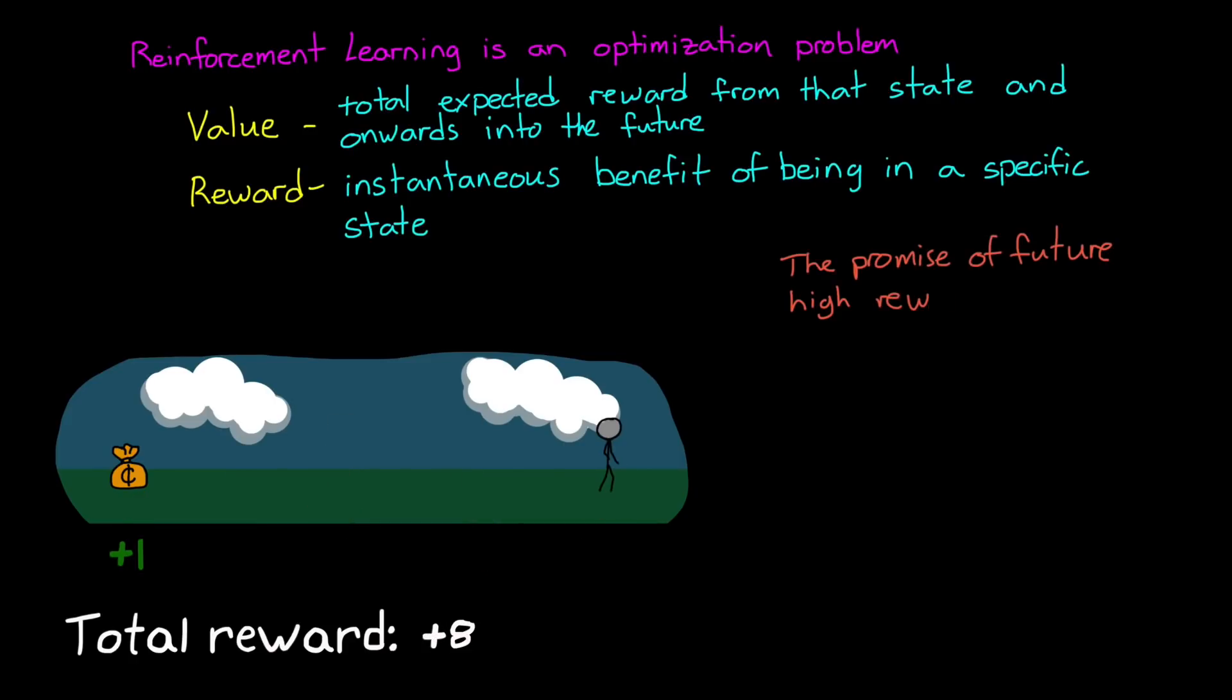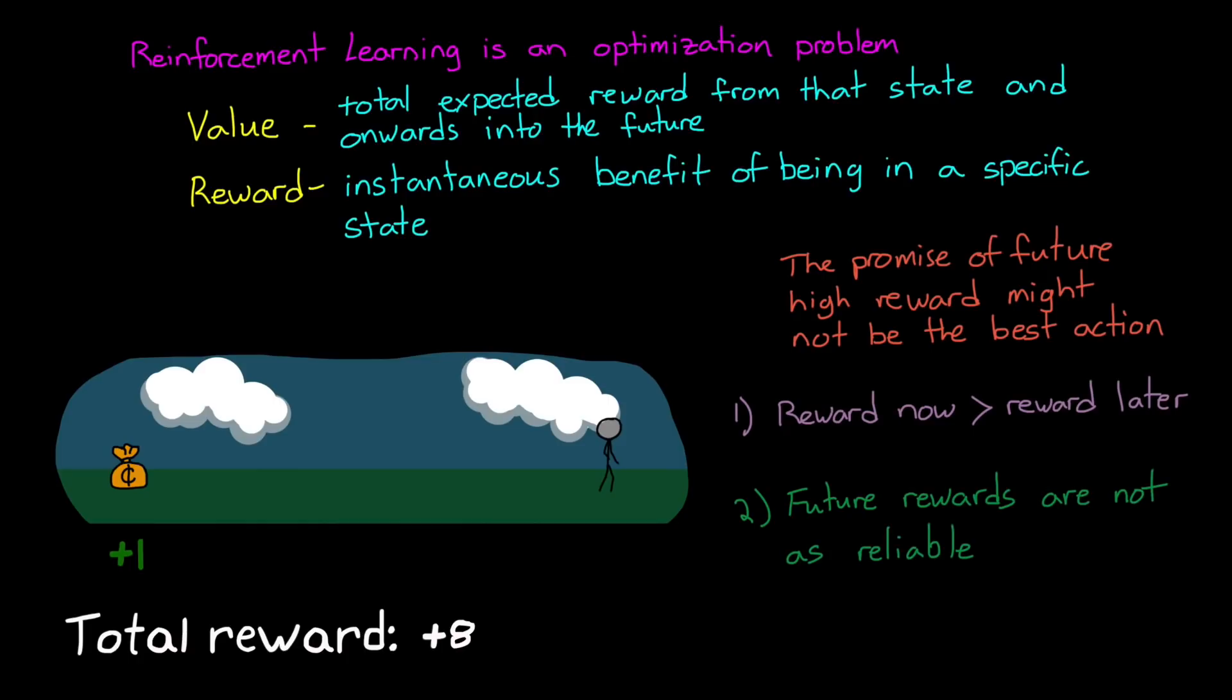Of course, often the promise of a high reward in the future still might not mean that the action is the best, and there's at least two good reasons for this. One, like with the financial market, money in your pocket now can be better than a little more money in your pocket a year from now. And two, your prediction of rewards further into the future become less reliable, and therefore that high reward might not be there by the time you reach it. In both of these cases, it's more advantageous to be a little more short-sighted when estimating value. And in RL, we can control this by discounting rewards by a larger amount the further they are in the future.